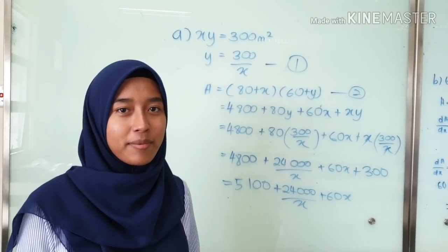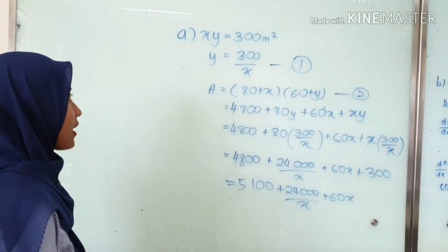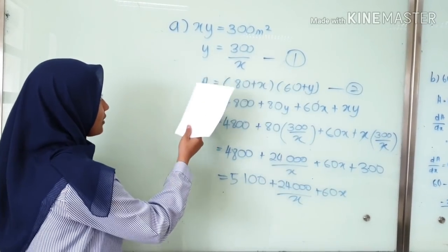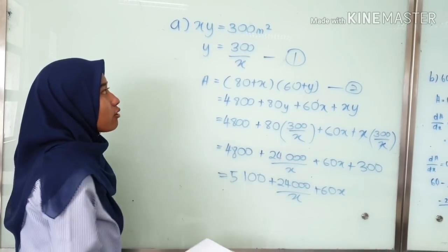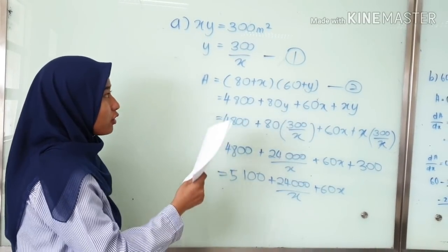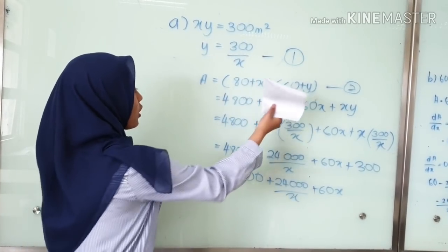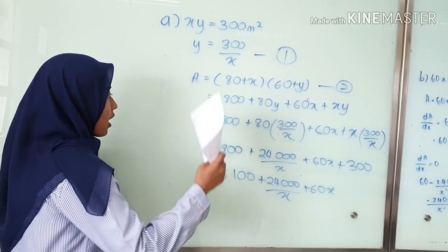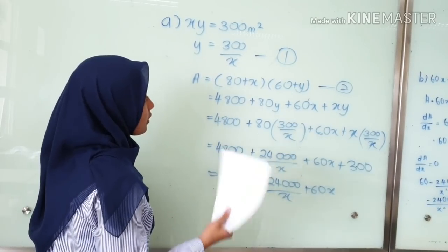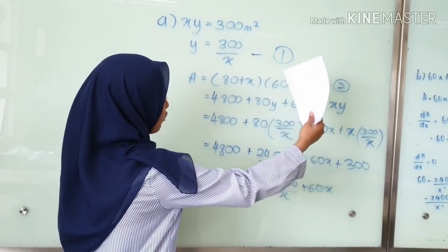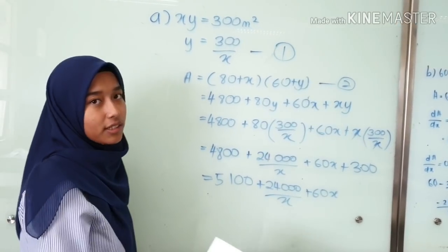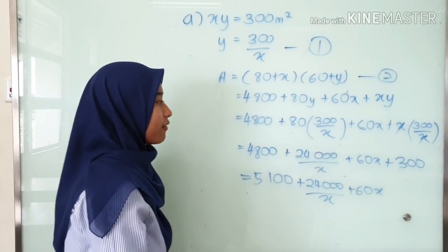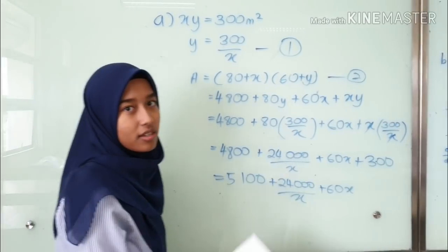My name is Meliana Biti Abdul Halim. This is the solution for question E. XY equals 300 square meters, which is the area of the stage. X is the length, Y is the width. Y equals 300 over X — equation 1. A equals (80 plus X) times (60 plus Y) — equation 2. After expanding, you substitute equation 1 into equation 2 and proceed the calculation until you get the final answer.